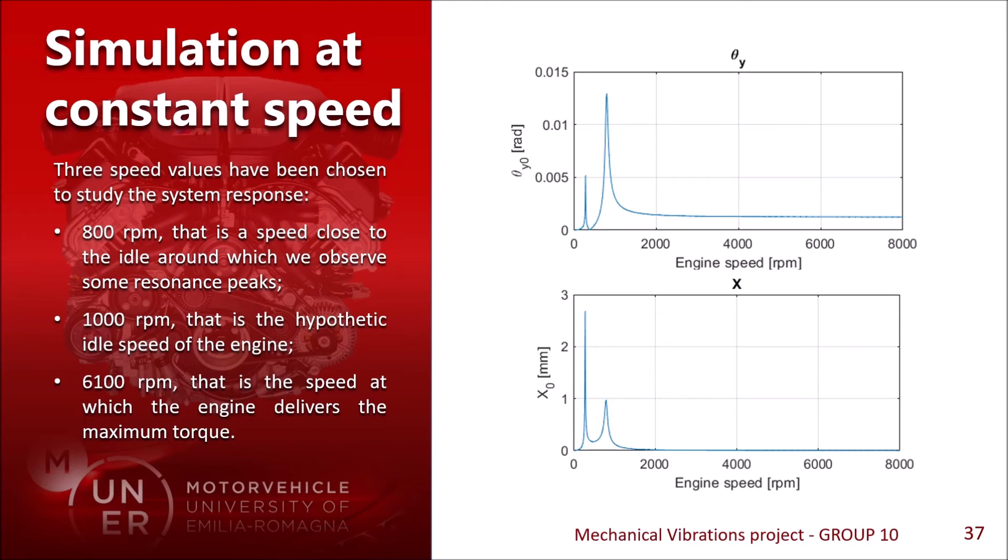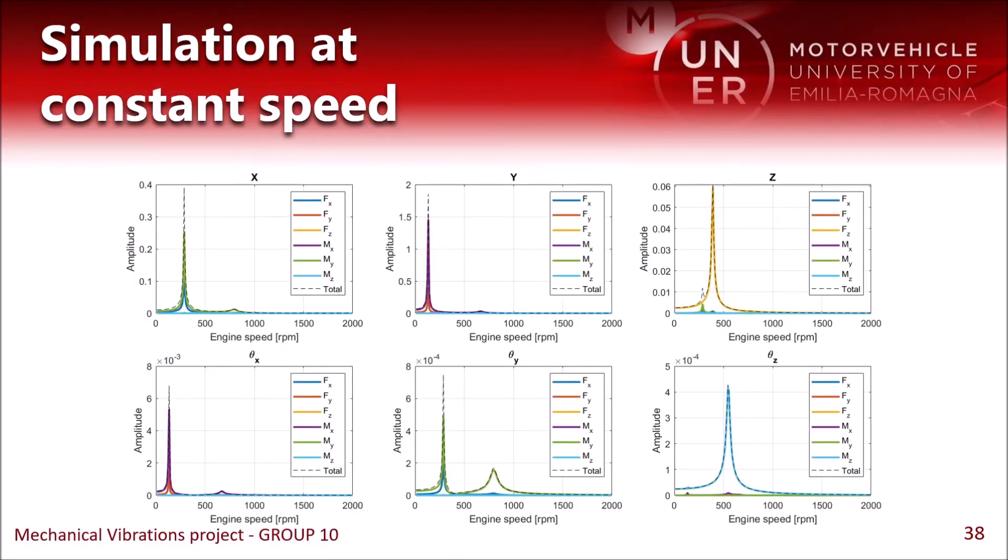To choose these speeds, we have made plots like this too, where we can see the amplitude of the response of every displacement as a function of the engine rpm. Also here, we can see which components of the forcing vector excite a certain degree of freedom the most.